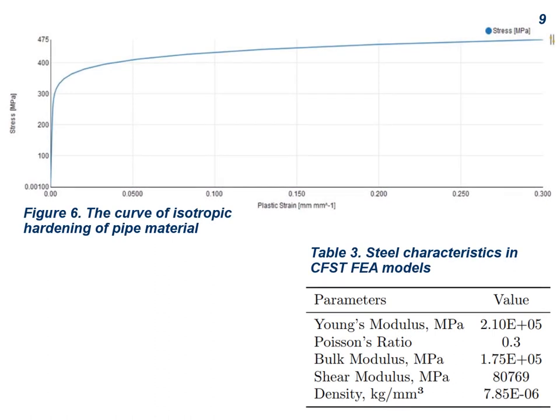Considering large plastic deformations, the steel pipe material model was developed considering multilinear isotropic hardening. Non-linear steel curves are found in Figure 6, and steel structural information data are presented in Table 3.